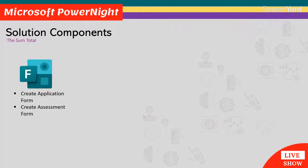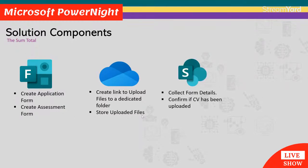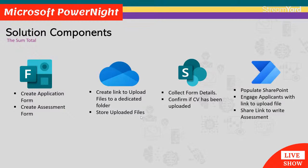So what are the components? First, we're going to use Microsoft Forms to create the application form and the assessment form. OneDrive is very handy — we're going to create a link to upload files to a dedicated folder in OneDrive and also use it to store those uploaded files. SharePoint will collect the form details and also have a column to confirm if the CV has been uploaded. Microsoft Power Automate is going to help us populate SharePoint with form responses, engage applicants with a link to upload their file, and also send them a link to start the assessment.